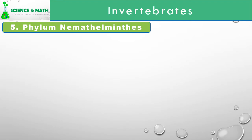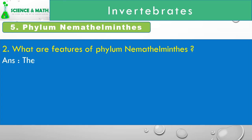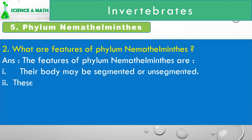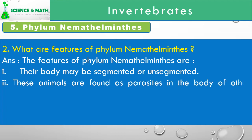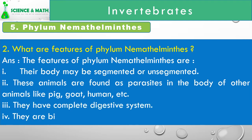Features of Phylum Nematohelminthes: 1. Their body may be segmented or unsegmented. 2. These animals are found as parasites in the body of other animals like pig, goat, human, etc. 3. They have a complete digestive system. 4. They are bisexual animals.